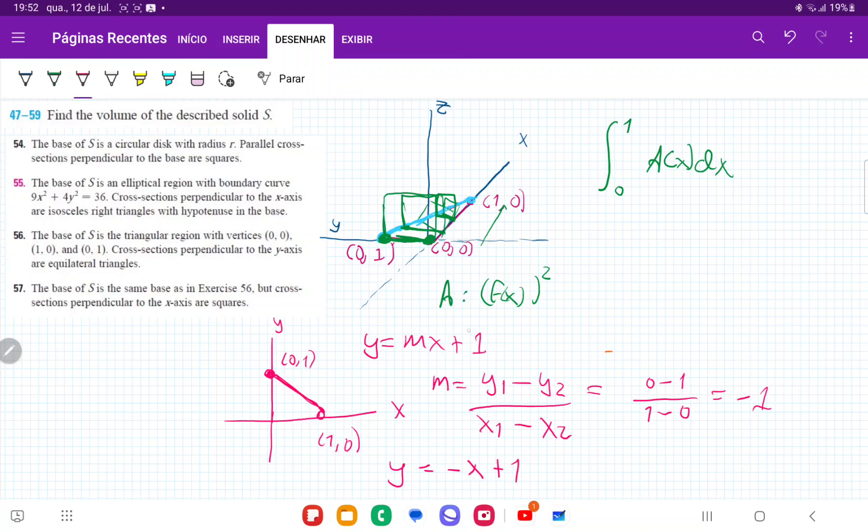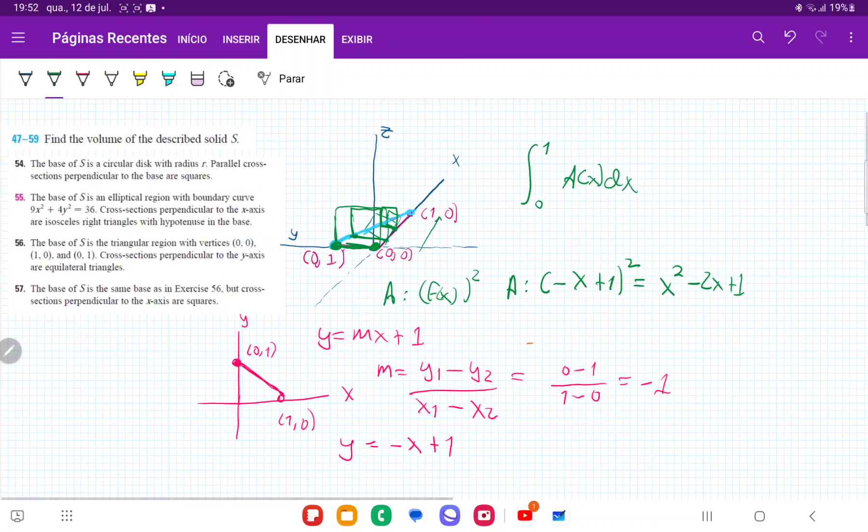Because our area is f(x)², we have that the area equals (-x + 1)², which is x² - 2x + 1. Now that we have our area in terms of x, we can plug this back in. So this is (x² - 2x + 1)dx.